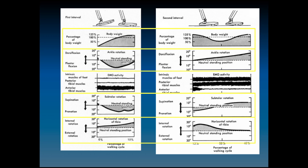The rotation of the tibia during the first interval is internal rotation, then going into external rotation. We need to look at all of these activities together: body weight, joint rotation, and EMG activity.